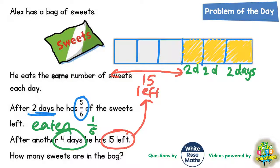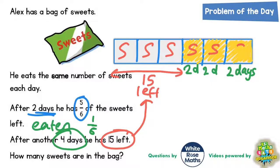There are three sections left on the bar and that's worth 15, so each of those sections must be worth five each — split 15 into three bits, you get five each. So each of the sections on the bar must be worth five. And it's the same for the three sections that we've rubbed out — so this section's worth five, and so's this, and so's this.